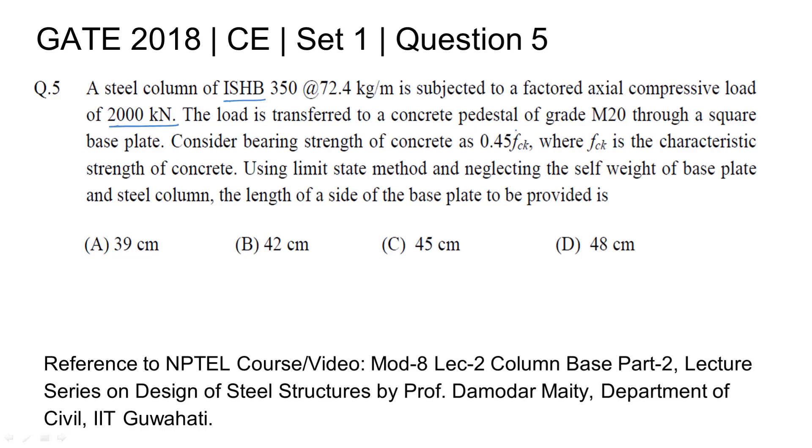The load is transferred to a concrete pedestal of grade M20 through a square base plate. Consider bearing strength of concrete as 0.45 FCK, where FCK is characteristic strength of concrete. Using limit strength method and neglecting the self weight of the base plate and steel column, the length of a side of the base plate to be provided is.